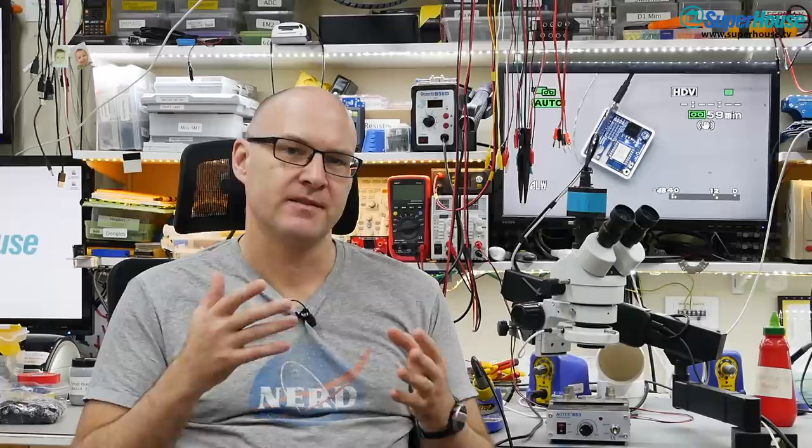Now my quest to solve this problem came about because I was working on a project where I wanted to put a simple header onto a board and not have to worry about adding the auto-reset circuitry. Then I saw the WESP32 project which does exactly that. It's got a 6-pin, 0.1 inch pitch header and the USB interface is on a separate sub-board.